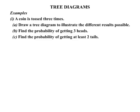Now in this lesson we look at drawing some tree diagrams to help us solve our probability questions. A coin is tossed three times. In Part A we need to draw a tree diagram to illustrate the different results possible. Then in Part B find the probability of getting three heads. And finally in Part C, find the probability of getting at least two tails.